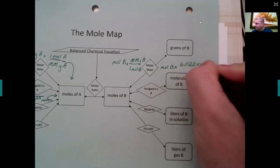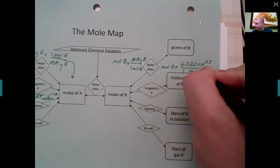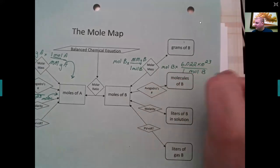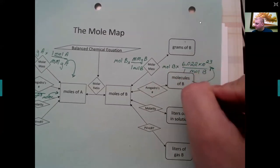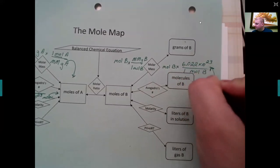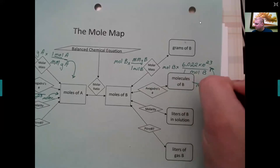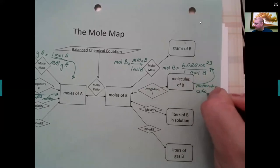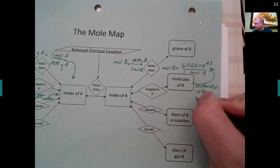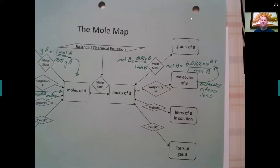Likewise, for molecules: you would have moles of B multiplied by Avogadro's number over one mole of B. This could apply to molecules, atoms, ions, or anything like that.